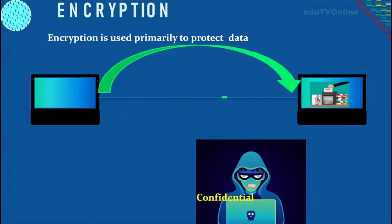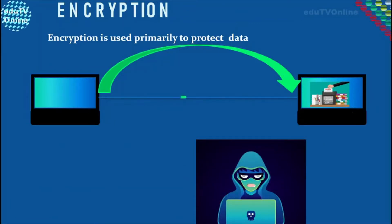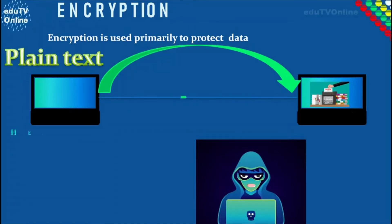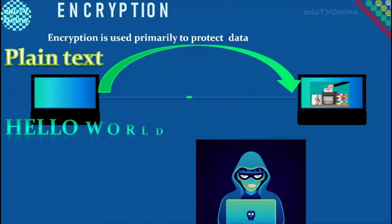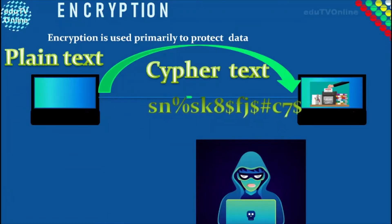At the same time, encryption won't prevent hacking — it makes the data meaningless unless the recipient has the necessary decryption tools. The normal representation of data before it goes through an encryption algorithm is known as plaintext, and the output of data after encryption is known as ciphertext.